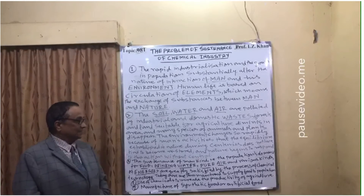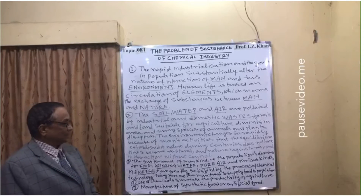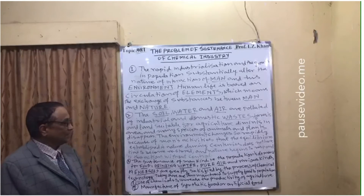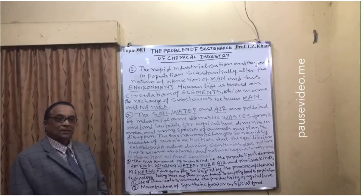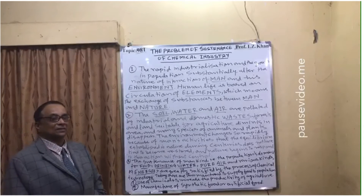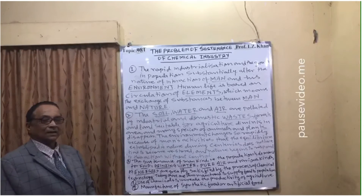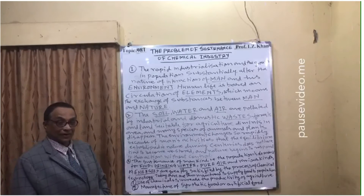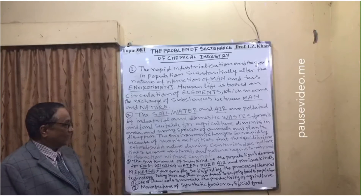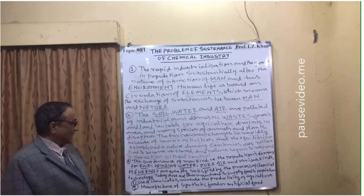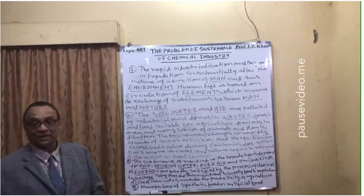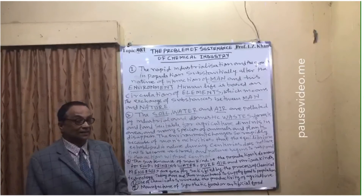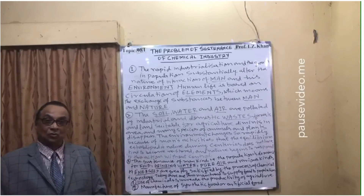The environment changes so rapidly because of man's activities that the equilibrium established in nature over centuries does not have time to be restored. It is all going out of hand and out of control. Nature is beginning to respond to these actions without control, in the form of melting glaciers and heavy rainfall here and there without season or time — and that is due to global warming.